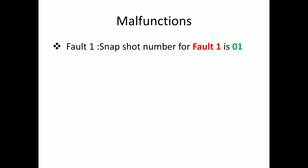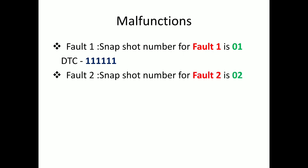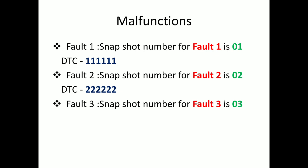There are a number of faults listed here. For fault one — for example, the accelerator is not working, the brake is not giving proper pressure, or some sensor has failed — this is considered fault one. For fault one, the snapshot number is 01 and the DTC is 111111. For fault two, the snapshot number is 02 and the DTC is 222222. Note that the snapshot number may sometimes be the same, but the DTC will never be identical. For fault three, the snapshot number is 03 and the DTC is 333333.